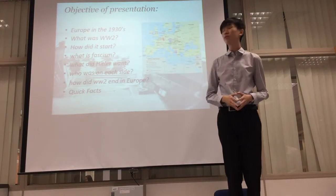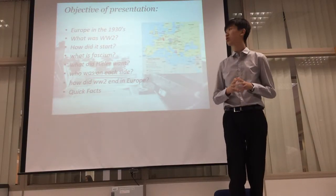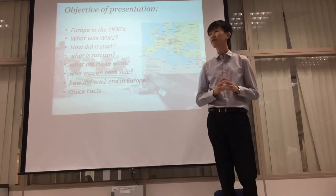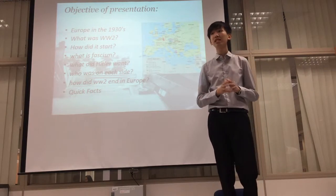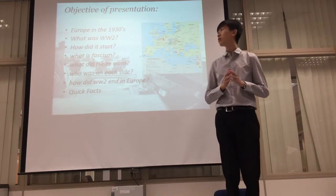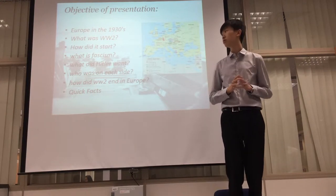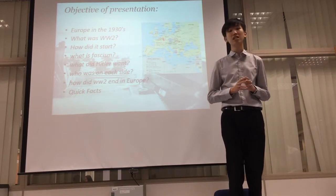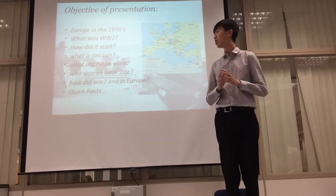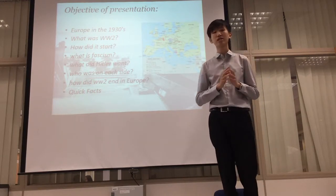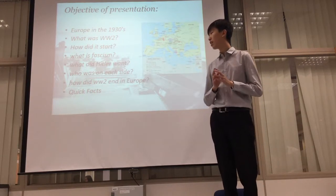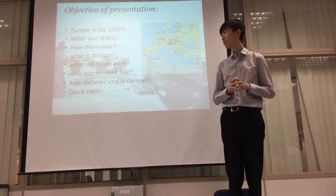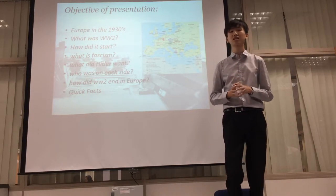And now I will touch on the objectives of the presentation. The first one is Europe in the 1930s. What was World War II? What is fascism? Followed by what did Hitler want? And who was on each side? And how did World War II end in Europe? And finally, quick facts.